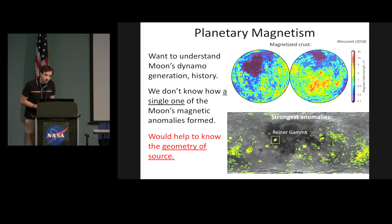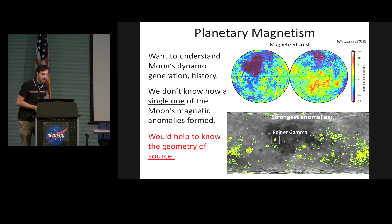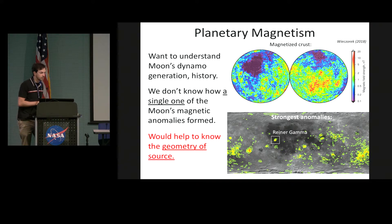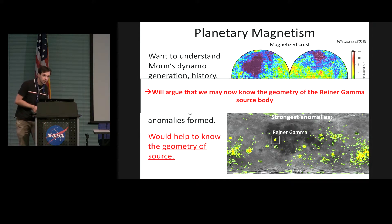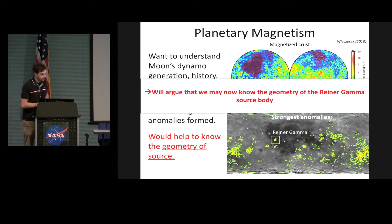To understand that, it would help to know the geometry of the thing that's been magnetized. Is it triangles, ellipses, lines? What does it look like? What is this material that's been magnetized? I'm going to argue that we may now know the geometry of the Reiner Gamma source body — that will be the conclusion of the talk. I'll show you a model for what the source body looks like.